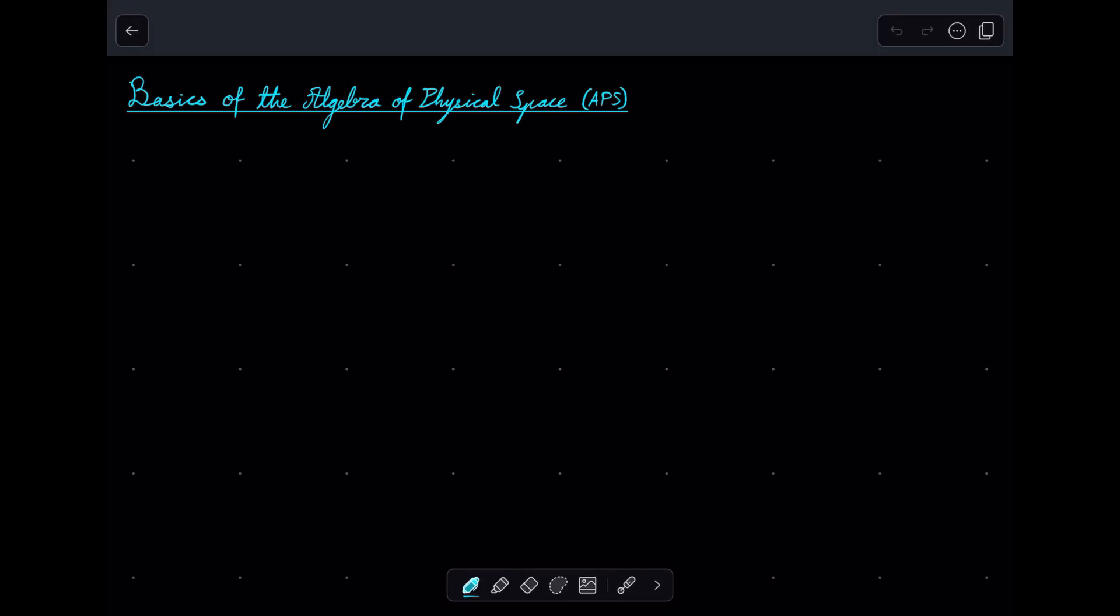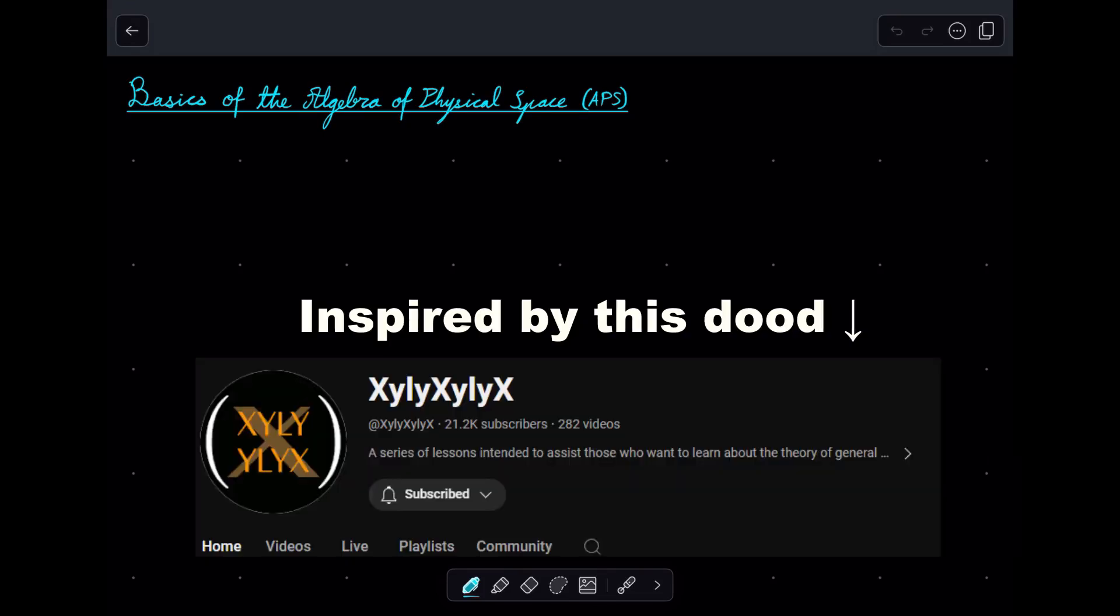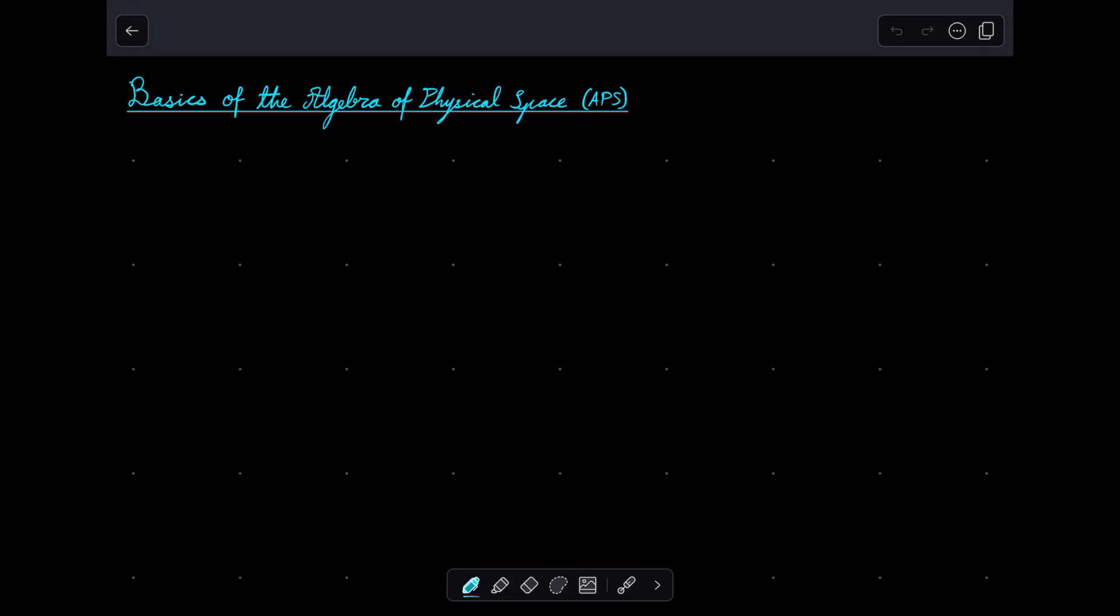Hello and welcome back to another video. I am in fact not dead, and I'm going to make some more videos on the basics of the algebra of physical space. Specifically, I'm going to be doing a series on special relativity using the algebra of physical space, which is also known as 3D geometric algebra or 3D vanilla geometric algebra, but it's also equivalent to a well-known algebra in physics called the Pauli algebra. Here I'll call it the Pauli algebra of space, or I'll say APS, or I'll just say 3D VGA. They all mean the same thing.